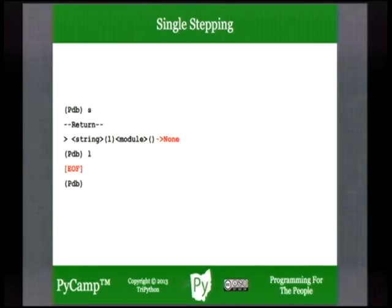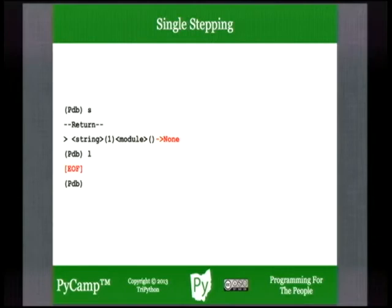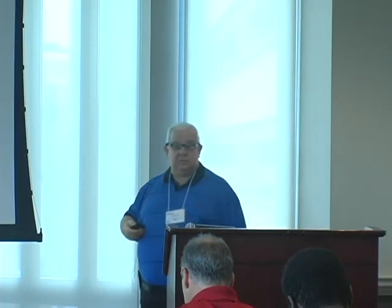Our fizzbuzz program does something very reasonable: if you don't enter the correct number of command-line arguments, it prints the doc string for the module, which has documentation about how to run the script. So we're about to call the print function. If we step through it, we'll see the doc string printed, the program output, and then a 'return' line showing the return from the print function — whose return value is None. Then the instruction pointer is back at the print function line.